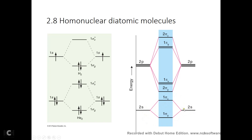Now let's look at boron-2. When you have boron-2, you need to put one P electron in here and another P electron in here. You have a total of six P orbitals in boron-2, but only two valence P electrons. The six P orbitals interact to form a sigma bonding orbital, a sigma anti-bonding orbital, two pi bonding orbitals, and two pi anti-bonding orbitals.